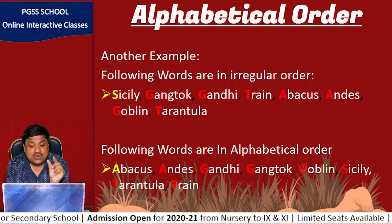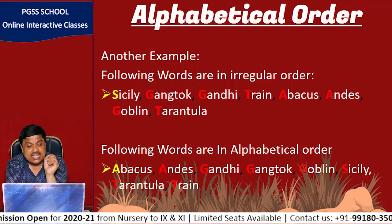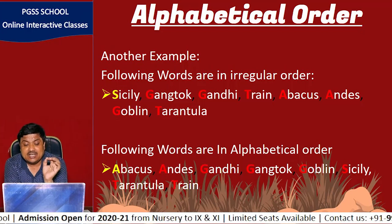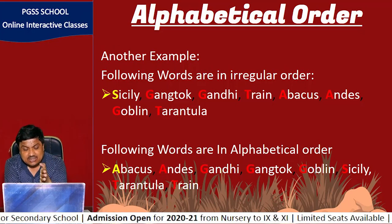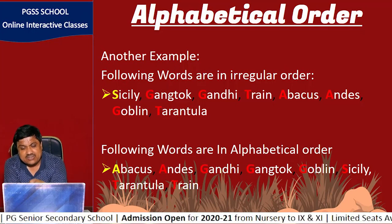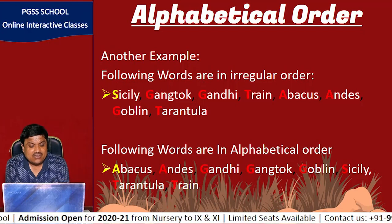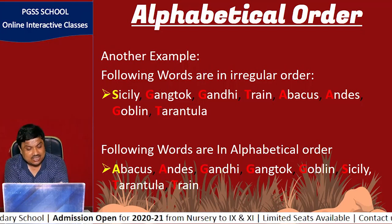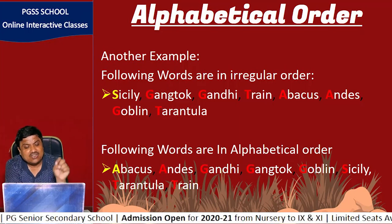For alphabetical order, we first find the first letter of the English alphabet, which is A. The words starting with A will be written first. Here we find two words starting with A, so we look at the second letter: one has B and the other has N. B comes first, so the order is: Abacus, Andes, Gandhi, Gangtok, Goblin, Sicily, Tarantula, Train.